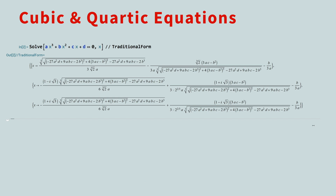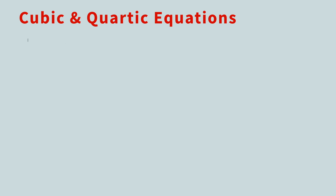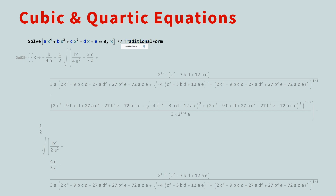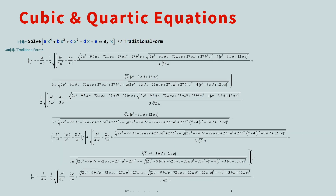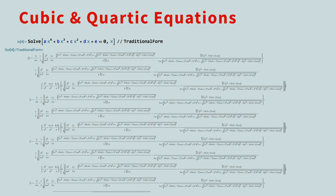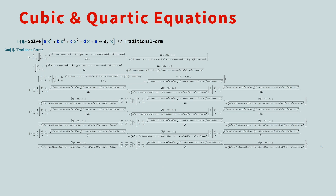Thankfully, with Mathematica you don't have to memorize the cubic formula. The Wolfram language can also return the solutions to a general fourth-degree polynomial using the quartic formula. To make this easier to read, we'll display it in traditional math form and zoom out several times until the expressions are fully visible. While you could simplify these expressions by introducing a discriminant, that's not necessary — focus on the bigger picture and let Mathematica do the computation for you.